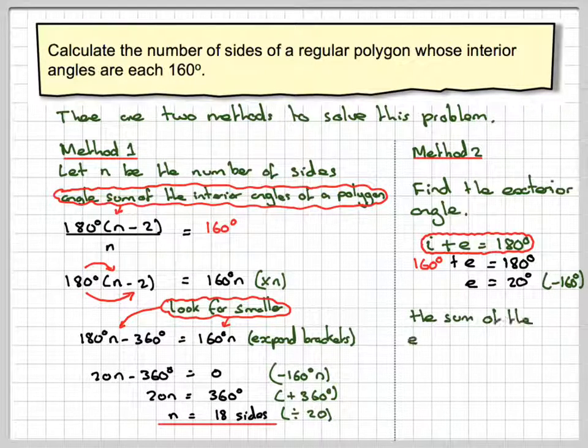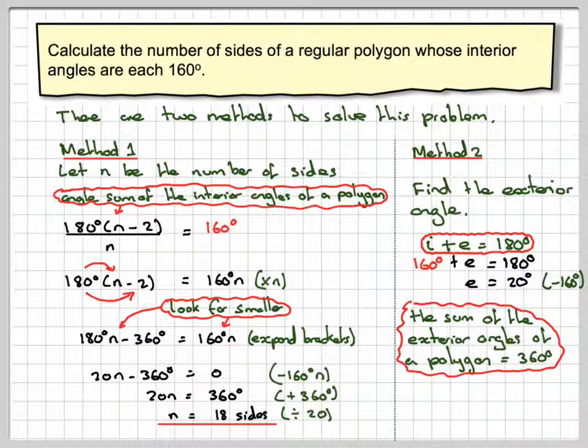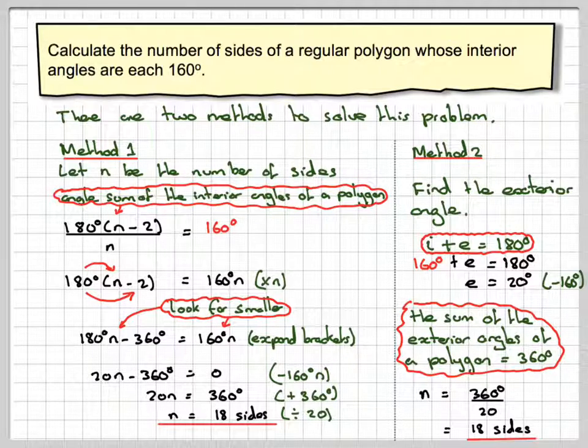Now the sum for any polygon of the exterior angles is going to be equal to 360. So if each one of these is 20 and we divide 20 into 360, that should give me the number of sides of the polygon. So n will be 360 divided by 20, which gives me the answer again, 18 sides. So this method here is a little bit easier than perhaps this method.